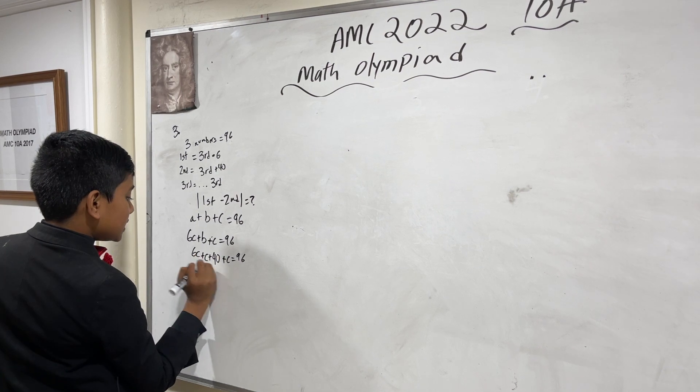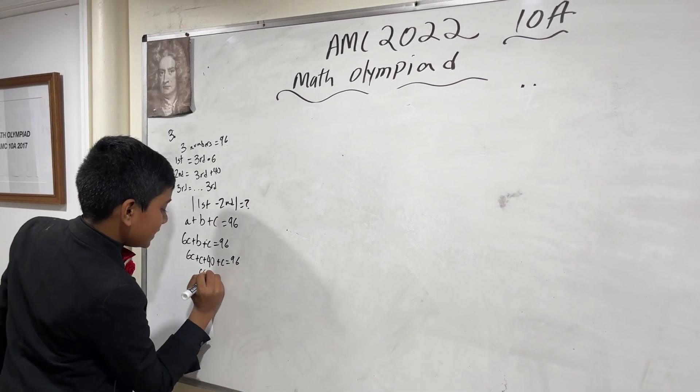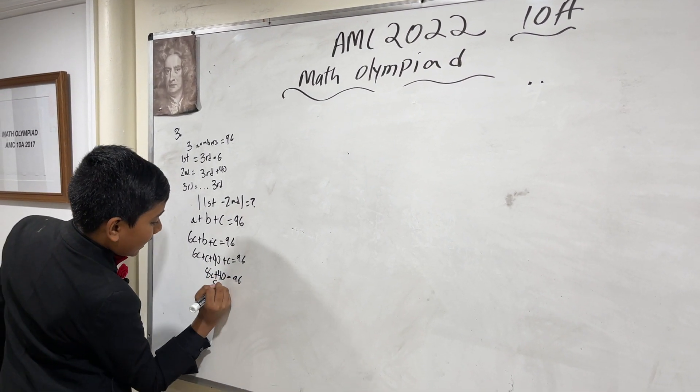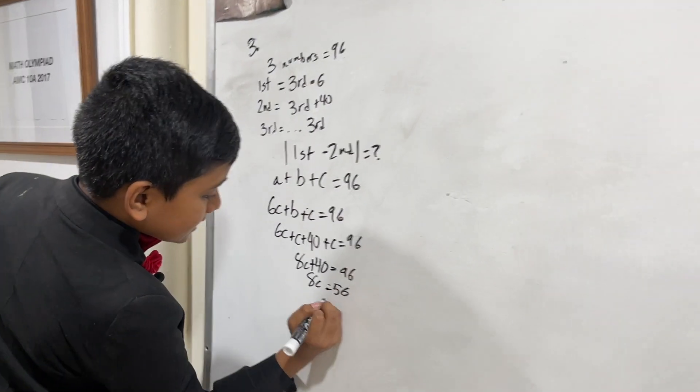So 6c plus c plus c is 8c plus 40 equals 96. 8c is 56 and c is 7.